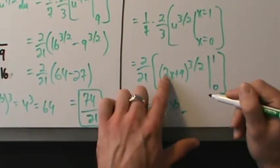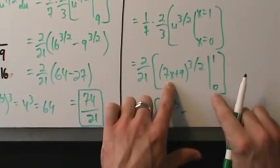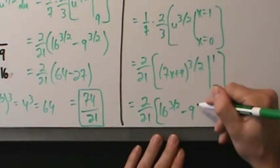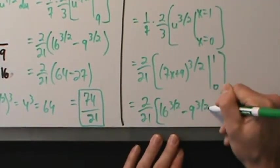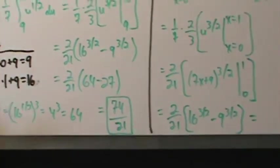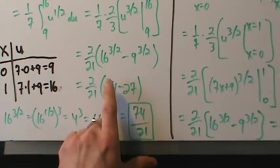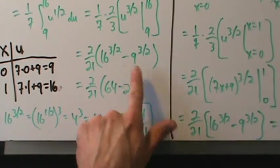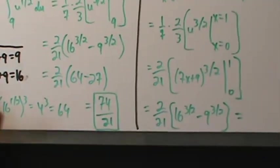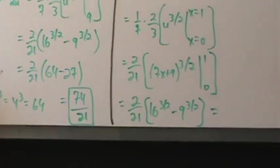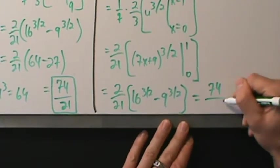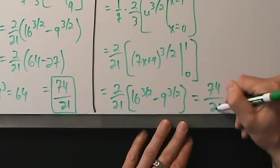So we get 64 − 27 — the exact same numbers we had with Method 1. The calculations are all the same, and we end up with 74/21.